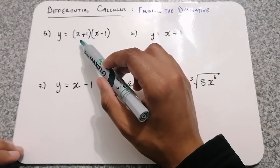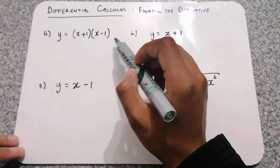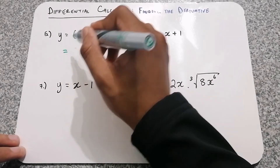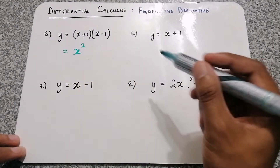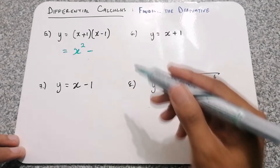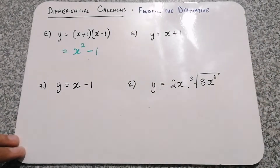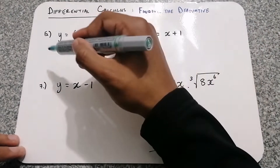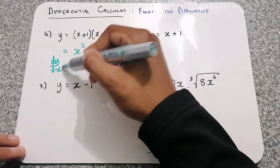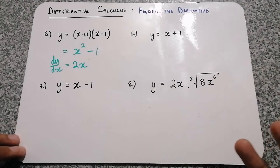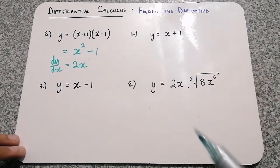Question 5: y equals x plus 1 times x minus 1. This is difference of squares. We can multiply this out by squaring the first term, which becomes x squared, putting a minus in the middle, and squaring the last term which is 1. Now we can differentiate. The derivative of x squared is 2x, and the negative 1, because it's a constant, just falls away. So that's our final answer.